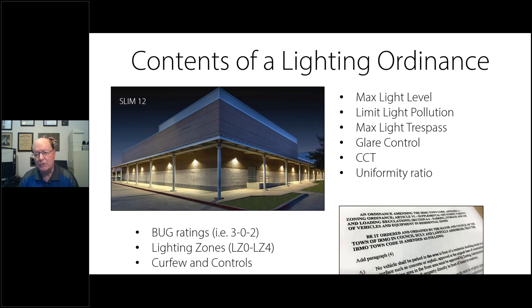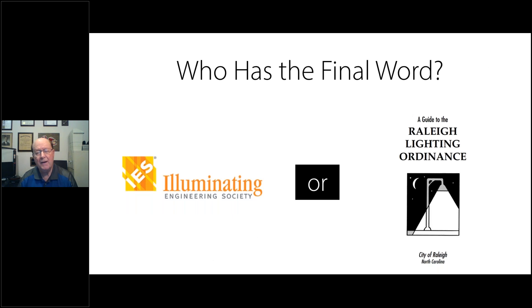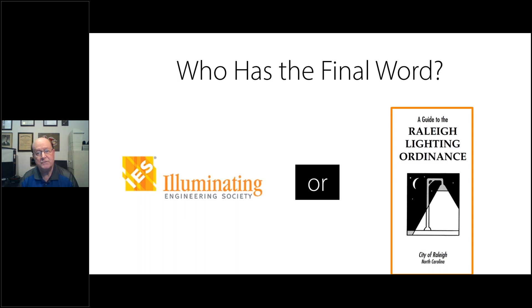Every lighting ordinance is customized, so you have to pay close attention. When asked which has the final word — the IES or the local municipality ordinance — the answer is the local ordinance always trumps everything. It's very important to get a copy of the ordinance, read it carefully, and understand the parameters you must meet to get approval from the town planning board before final sign-off.